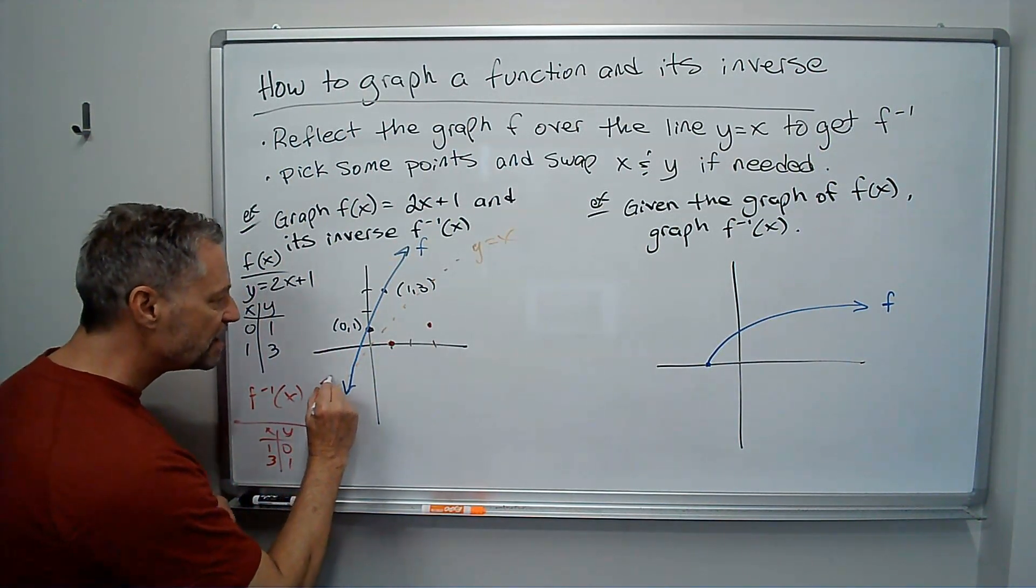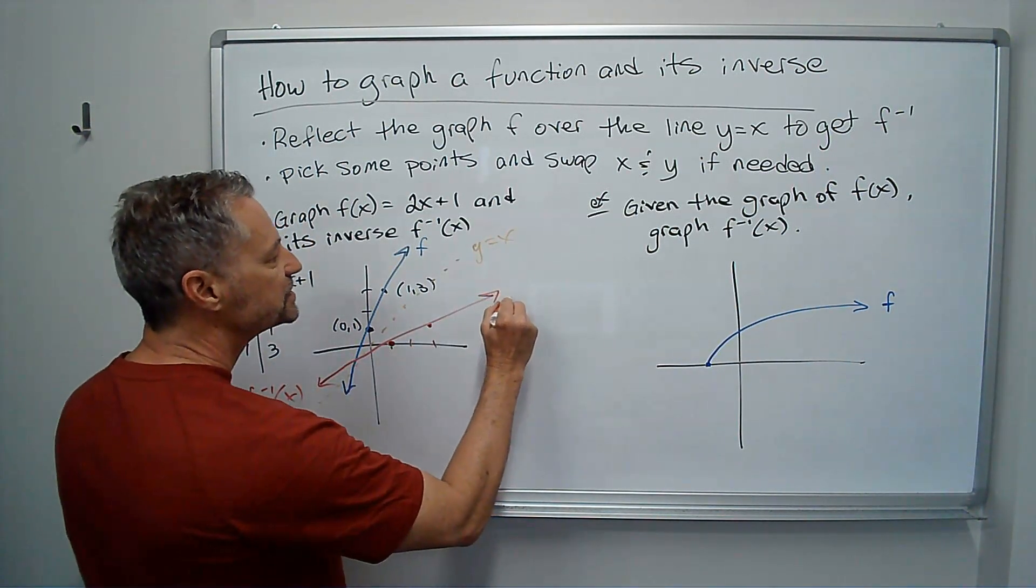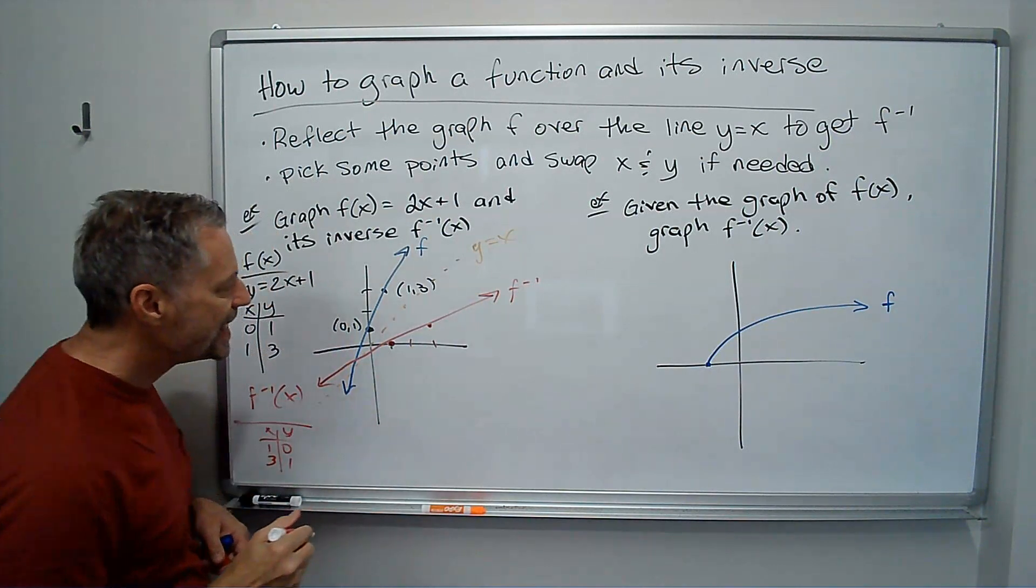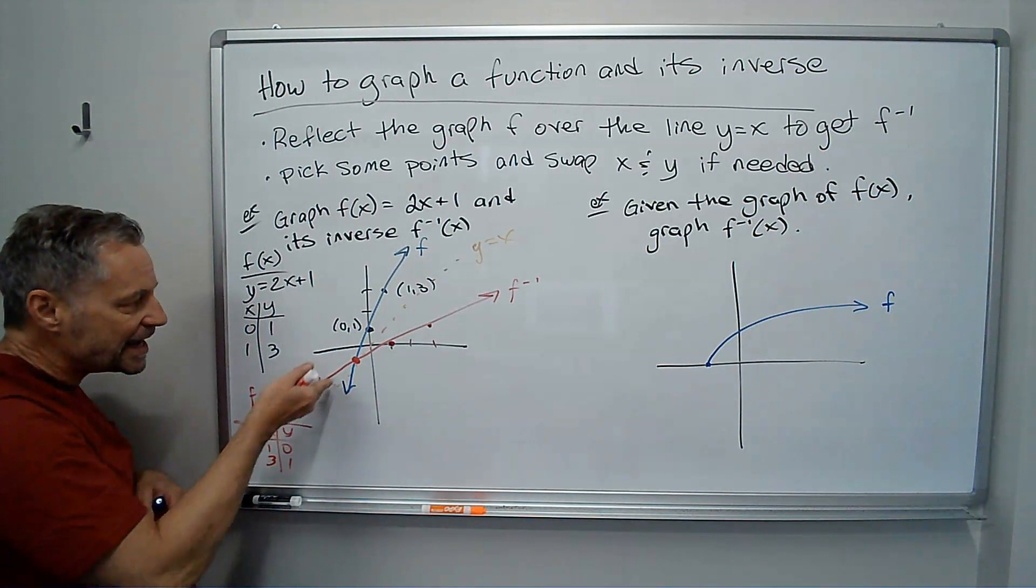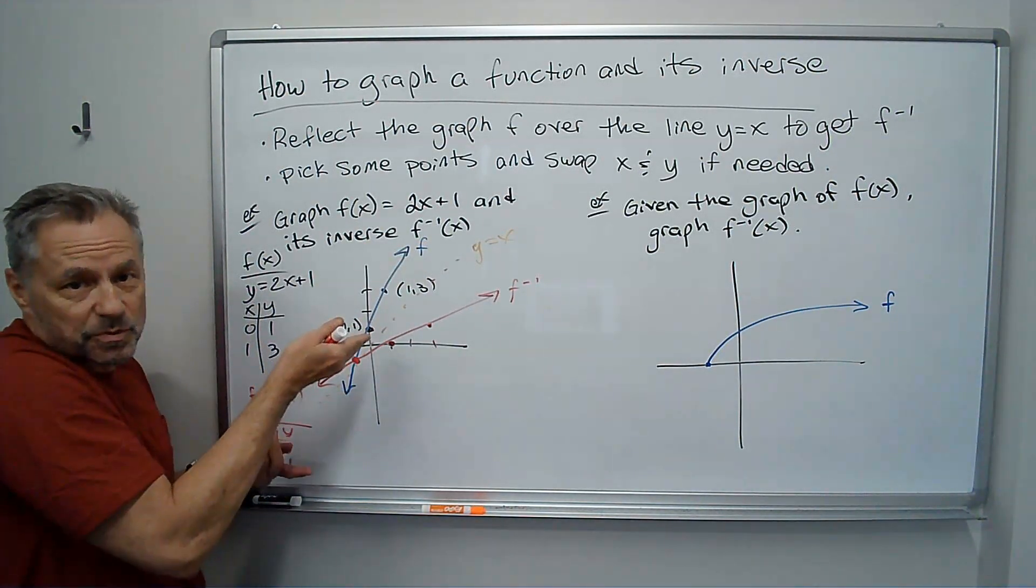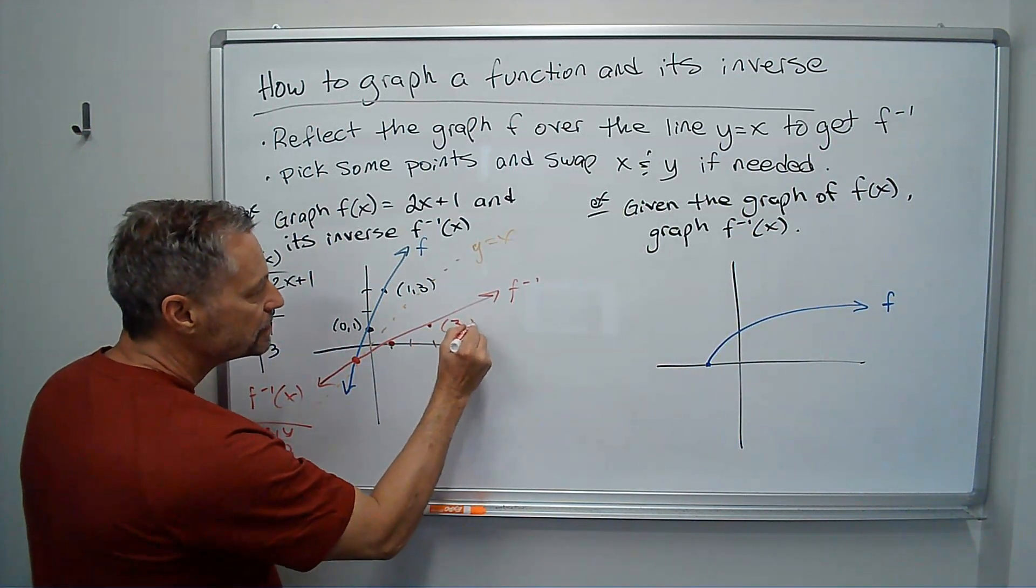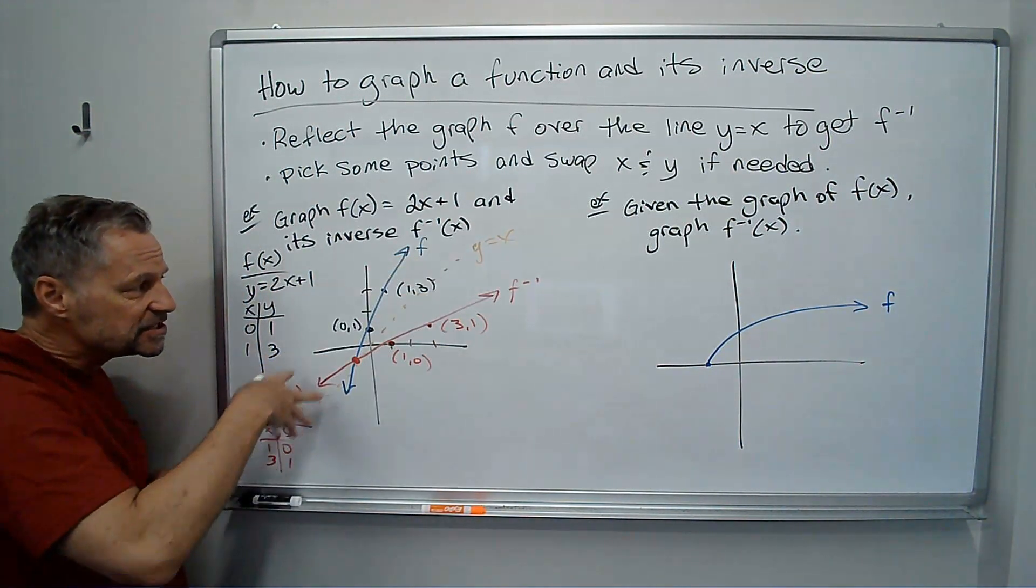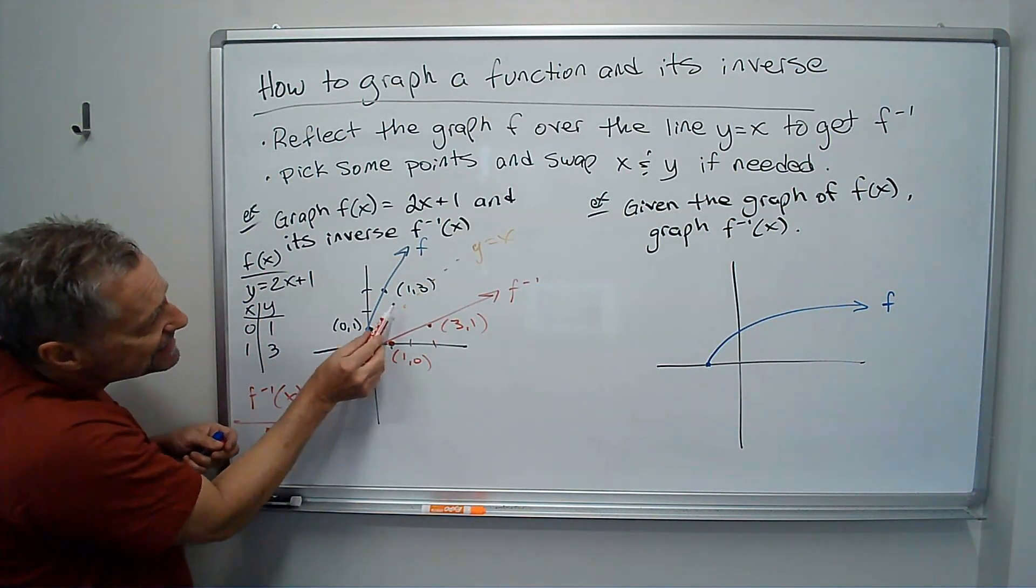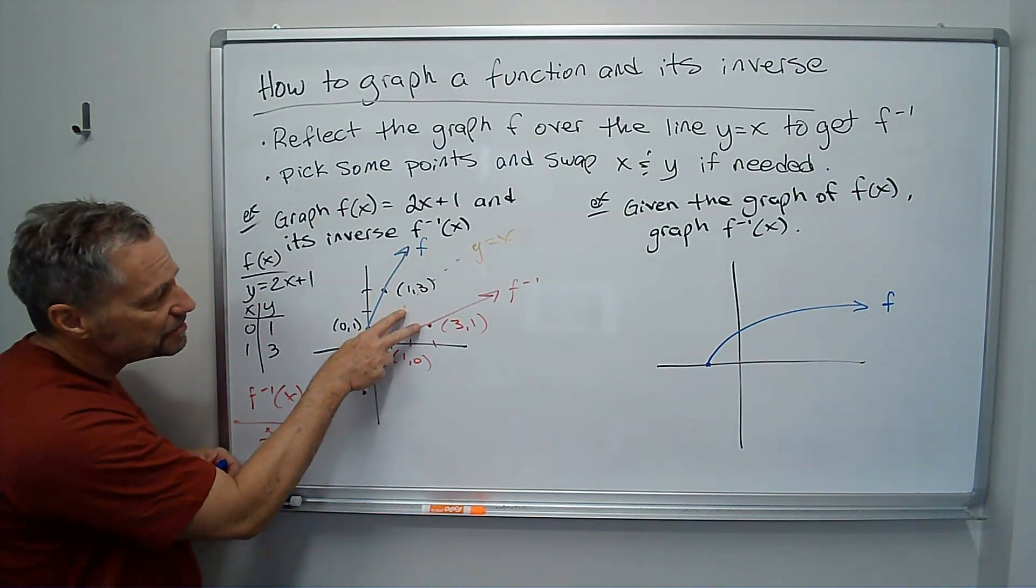And it's going to be the graph through here. This red one is going to be f inverse. And notice what happened. They crossed this point of intersection right on this line y equals x, because where the x and the y are the same point. But instead of 1, 3, I have 3, 1. Instead of 0, 1, I have 1, 0. And so these graphs are inverses of each other. Anytime I go straight across this y equals x, these are going to be the same distance away.